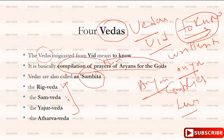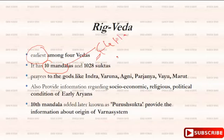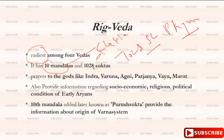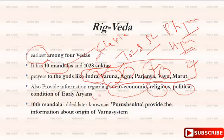Vedas are four types: Rig Veda, Sam Veda, Yajur Veda, and Atharva Veda. The Rig Veda is the earliest and oldest among all Vedas. It has 10 Mandalas (chapters) and 1028 Suktas (hymns/poems). Whatever prayers are given here are dedicated to gods like Indra, Varuna, Agni, Prajapati, Vayu, and Marut. Besides this, the Rig Veda gives information about the socio-economic, religious, and political condition of early Aryans.